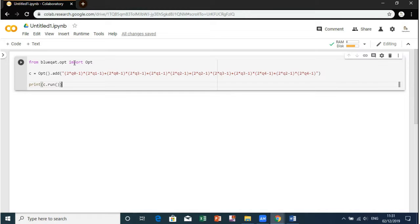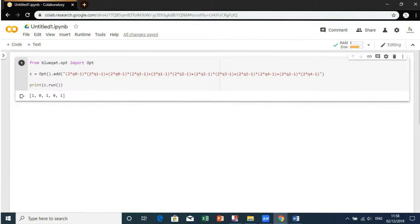Now let's move on with Google Colab. Now, we will simply use the code that was shown earlier. Here, we will get the answer 1, 0, 1, 0 and 1.